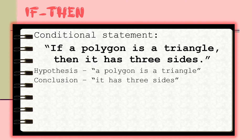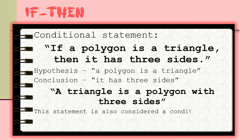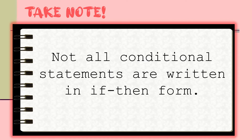If we rewrite a given statement such as 'a triangle is a polygon with three sides,' this is also considered a conditional statement. However, it is not written in if-then form. Not all conditional statements are written in if-then form — these are the kinds of conditional statements that need to be converted. Let us master how to identify the hypothesis and conclusion so we can easily transform conditional statements into if-then form.